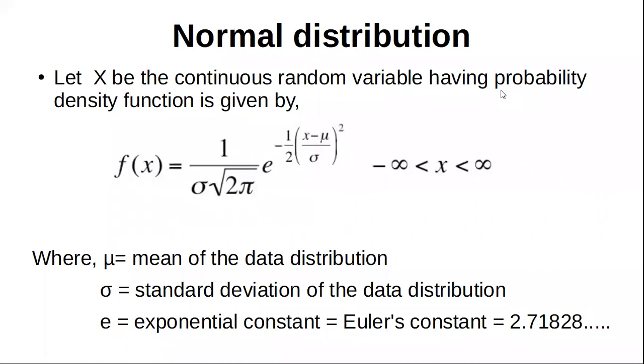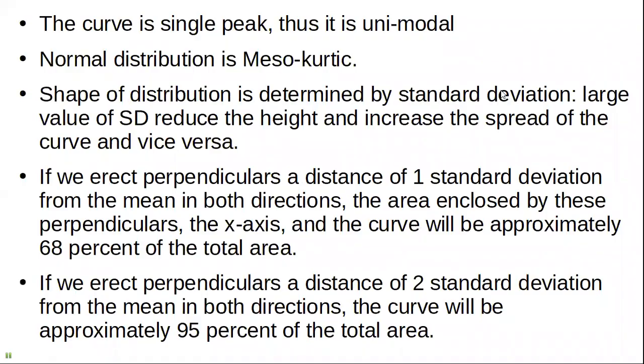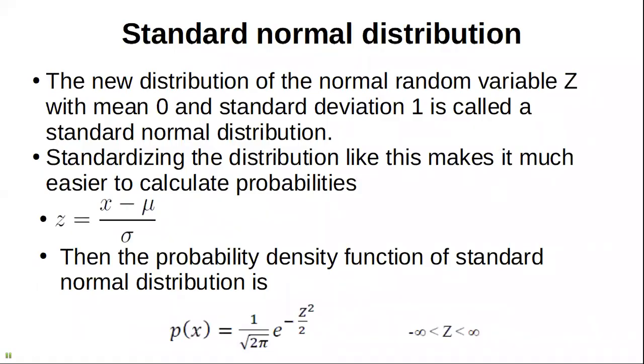Now we will do a standard normal distribution. So let's convert this. The mean is 0 and standard deviation is 1. This is the standard normal distribution.